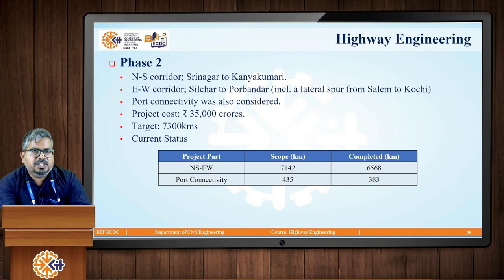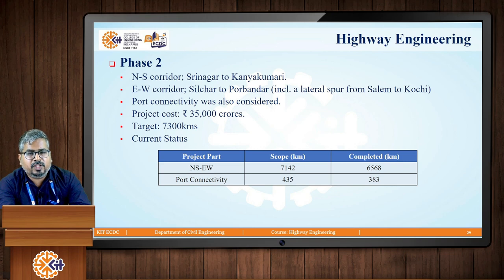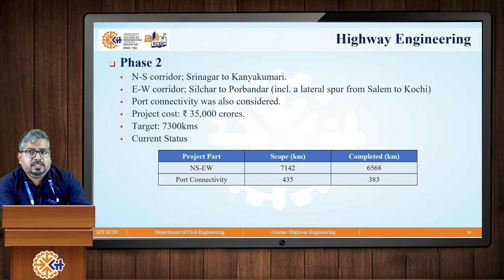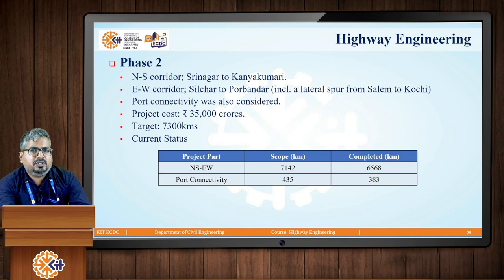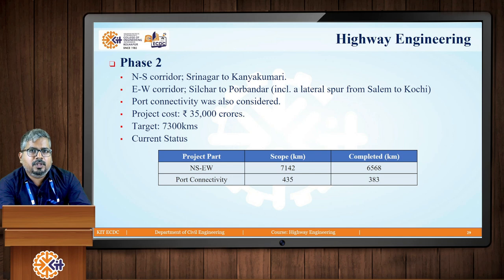Moving to Phase 2, this was majorly concerned with the North-South and East-West corridors of India. In the North-South corridor, the stretch from Srinagar to Kanyakumari was considered, while for the East-West corridor, the road stretch from Silchar to Porbandar was considered, which also included a lateral spur stretching from Salem to Kochi. Port connectivity was also given preference in this phase, and the estimated project cost was around rupees 35,000 crores. The target road length for this phase was 7,300 kilometers.